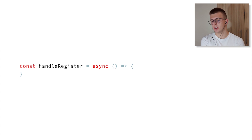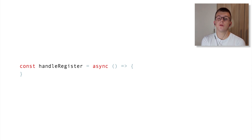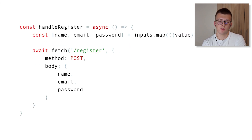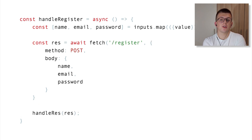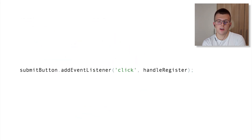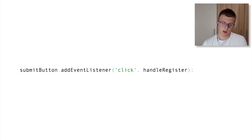After that, we'd create a handleRegister method used as an action in an event listener. We'd get values from the inputs, then use those inside a fetch call to create a request. We can save the fetch response to variables for error handling or loading states. Last but not least, we'd add an event listener to the submit button — on click, execute the handleRegister method we created previously.